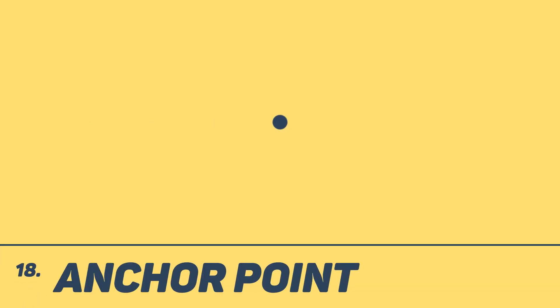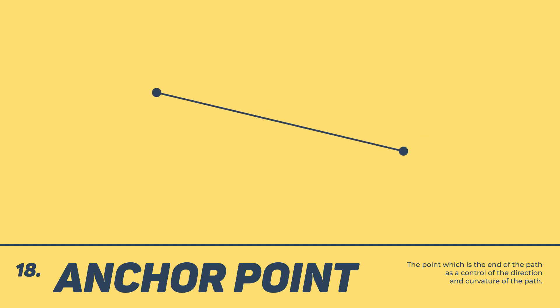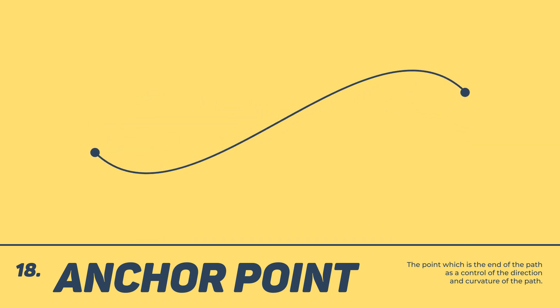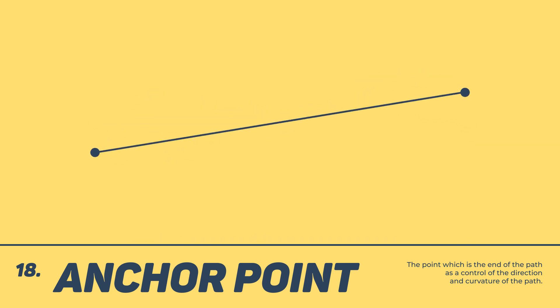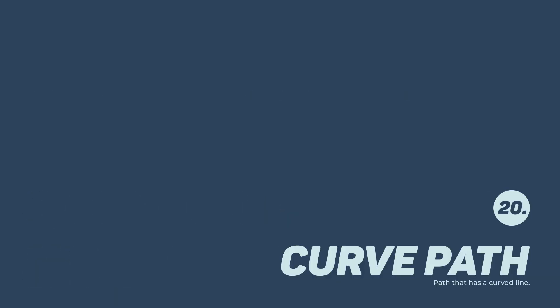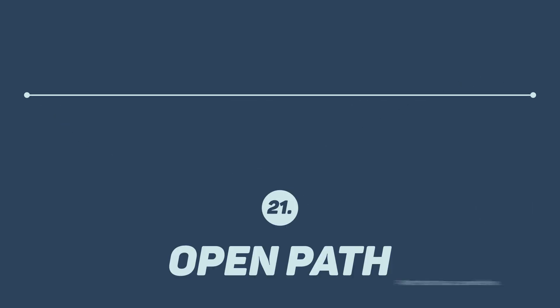Anchor Point — the point which is the end of the path, serving as a control of the direction and curvature of the path. Line Path — a path which has a straight line. Curve Path — a path that has a curved line.